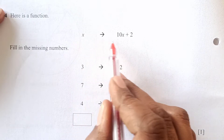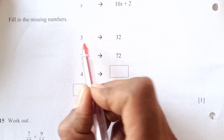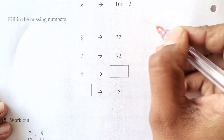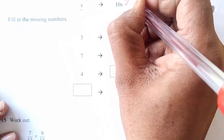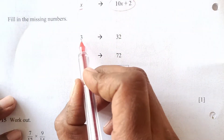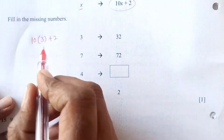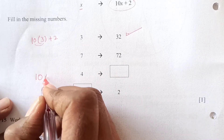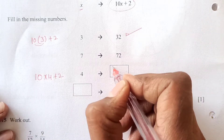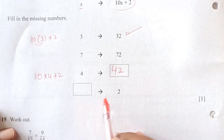Here we have the first question: a function x maps to 10x plus 2 — fill in the missing number. If you put x equals 3, the answer is 32. So x is the input and the output is 10x plus 2. For input 4: 10 times 4 plus 2 is 40 plus 2, which equals 42. You are simply replacing the value of x with the given number.